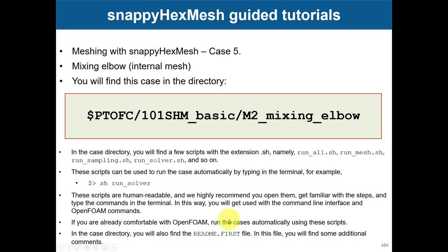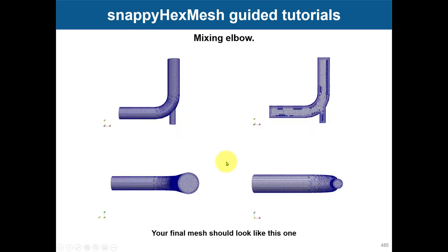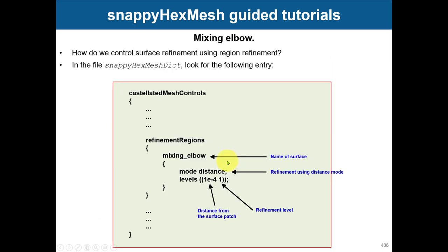We are done with the cylinder, now we move to a new geometry. This is the mix and elbow case in internal mesh. Here you have the location and what we're going to do: we have this pipe and we're going to mesh it. The main difference here is that the point location in mesh needs to be inside the STL.